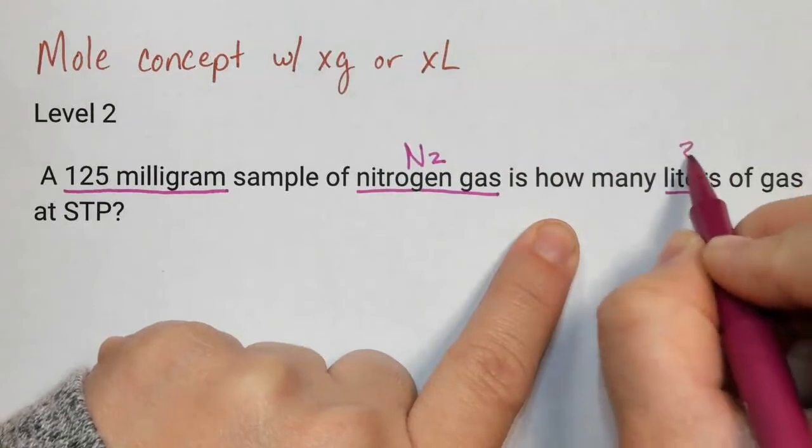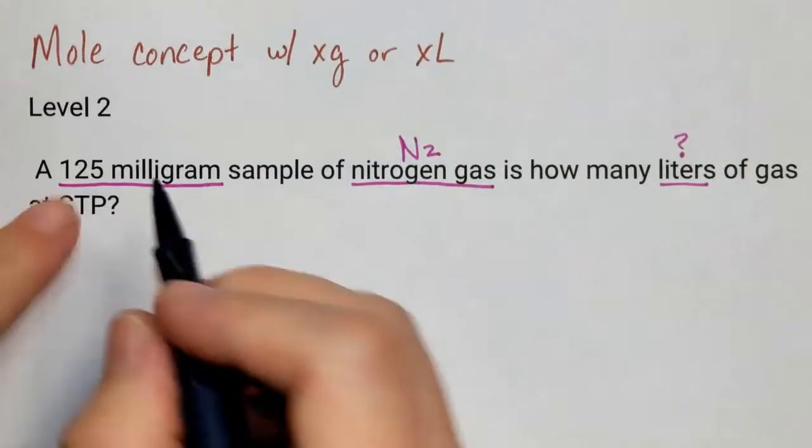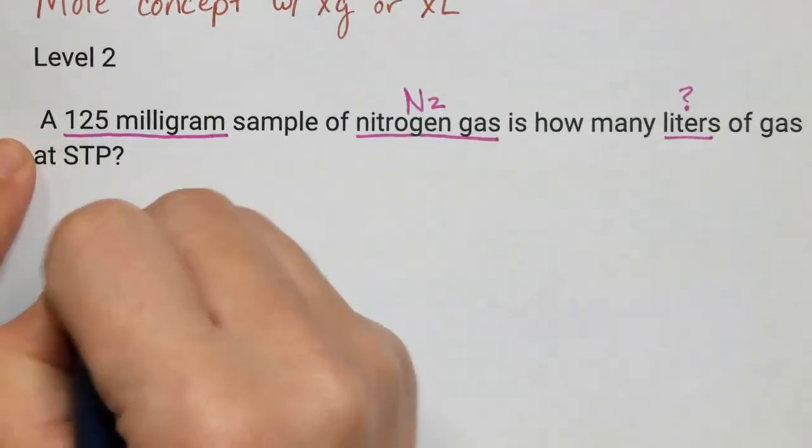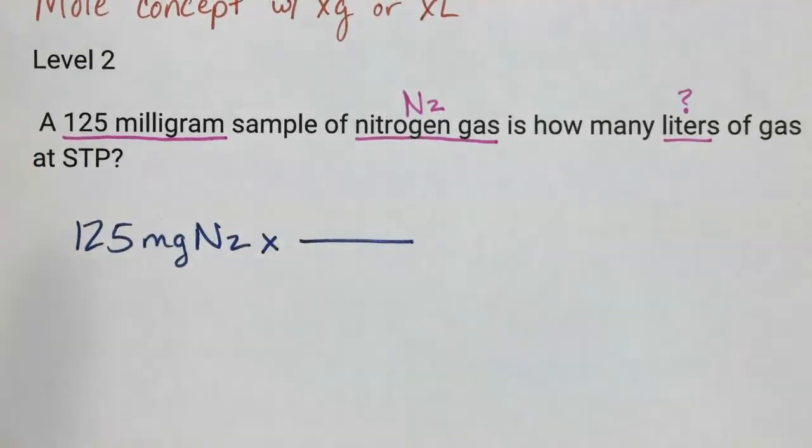How many liters of gas are at STP? So first, I'm going to take the starting amount, which is 125 milligrams nitrogen gas times draw a line.